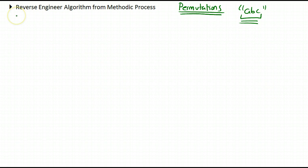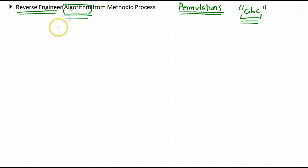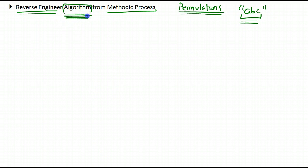What I'm going to do is observe myself solving this problem, look for certain patterns, and then reverse-engineer an algorithm from my solution — a methodic process that would allow me to solve that problem for any given string. Then we will move from there to implementing it in code.